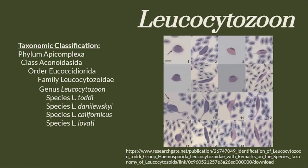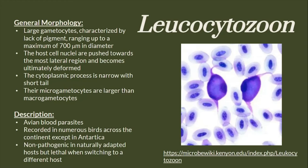Taxonomic classification for the genus Leucocytosoon. Species of Leucocytosoon are avian blood parasites, recorded in numerous birds across the continents except Antarctica. They can be non-pathogenic in naturally adapted hosts but lethal when switching to a different host. They have large gametocytes characterized by a lack of pigment, ranging up to a maximum of 700 micrometers in diameter. The host cell nuclei are pushed towards the most lateral region and become ultimately deformed. Their microgametocytes are larger than macrogametocytes.